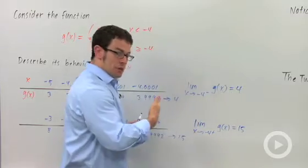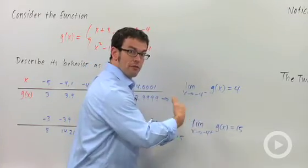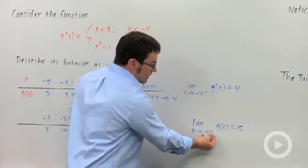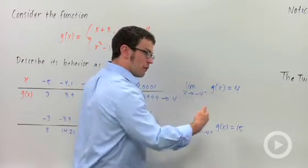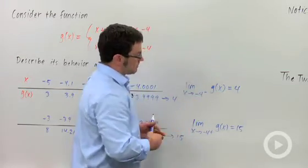The superscript negative means you're approaching negative 4 from the left, from the more negative direction. And the superscript plus means you're approaching negative 4 from the right, from the more positive direction.